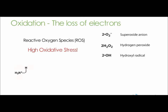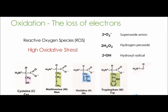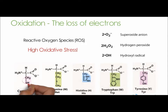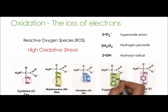Cysteine, methionine, histidine, tryptophan, and tyrosine are most susceptible to oxidation due to areas with high electron density. These high electron density areas result from the sulfur atoms of methionine and cysteine, and the aromatic rings found in histidine, tryptophan, and tyrosine.